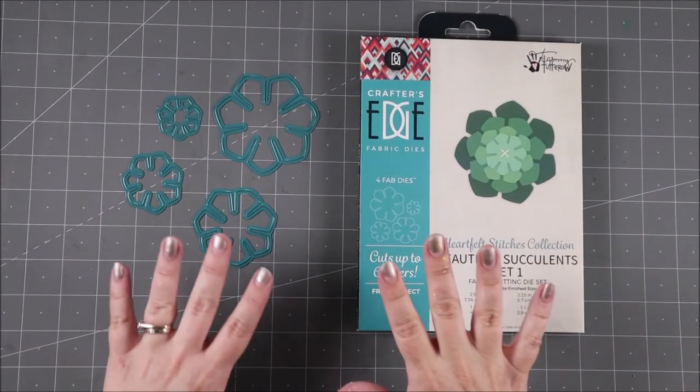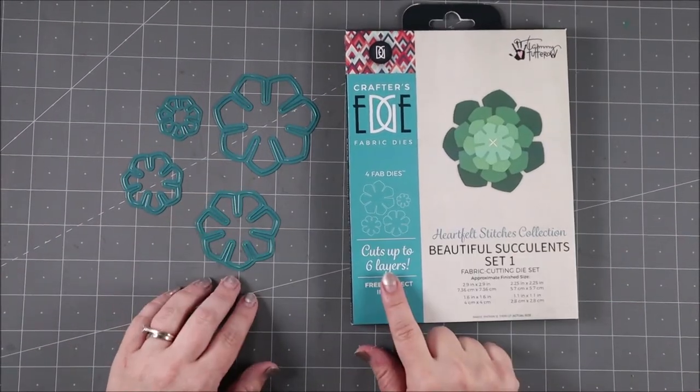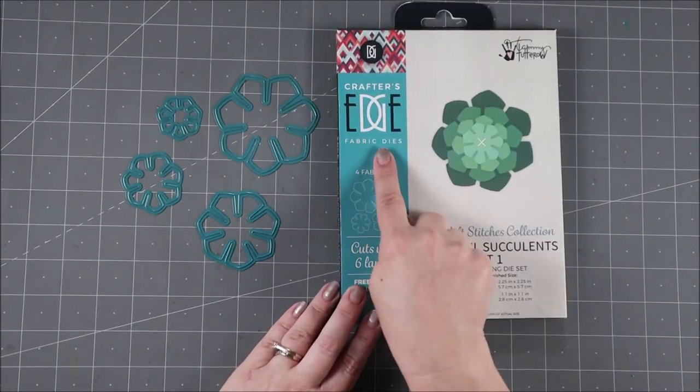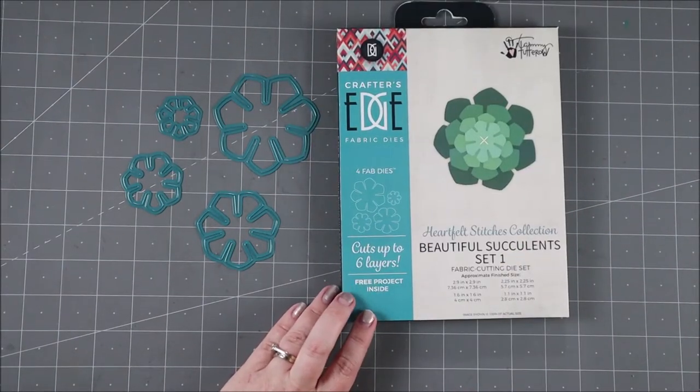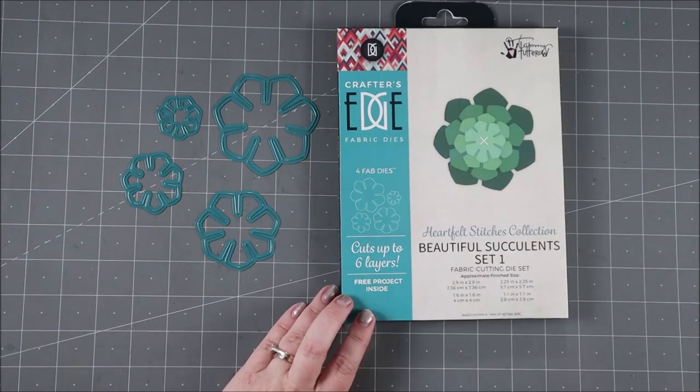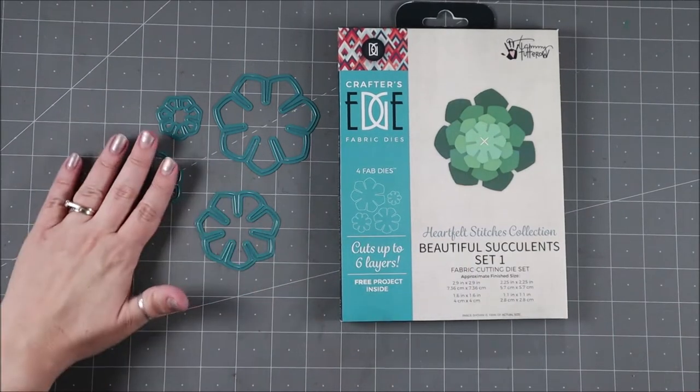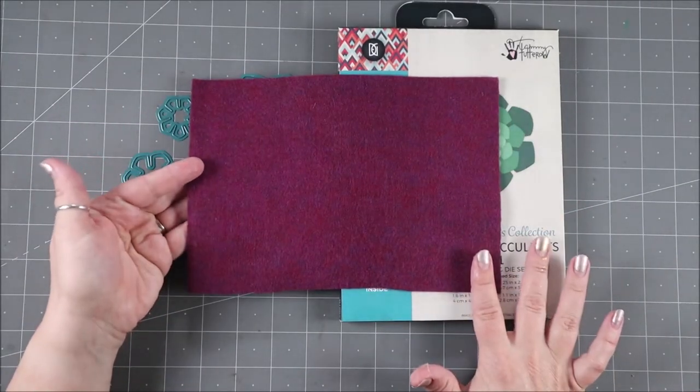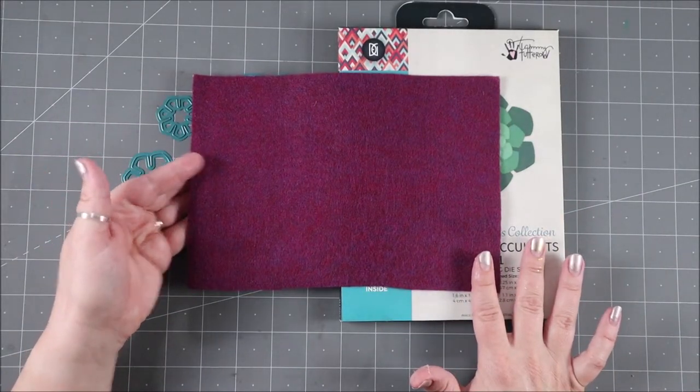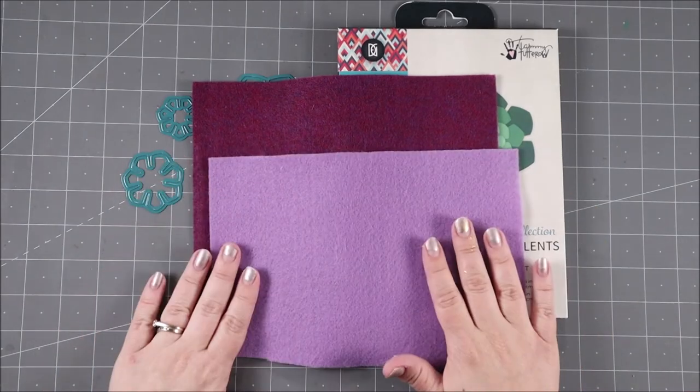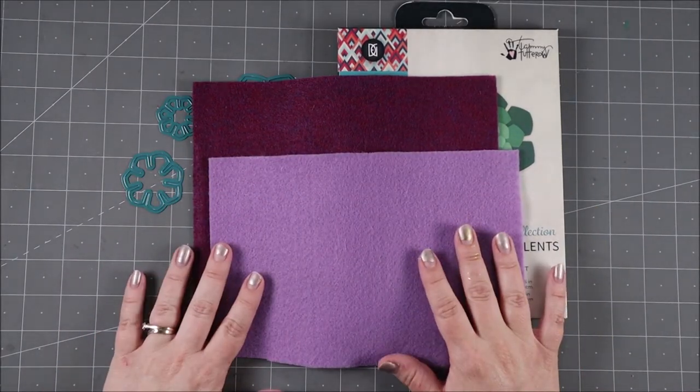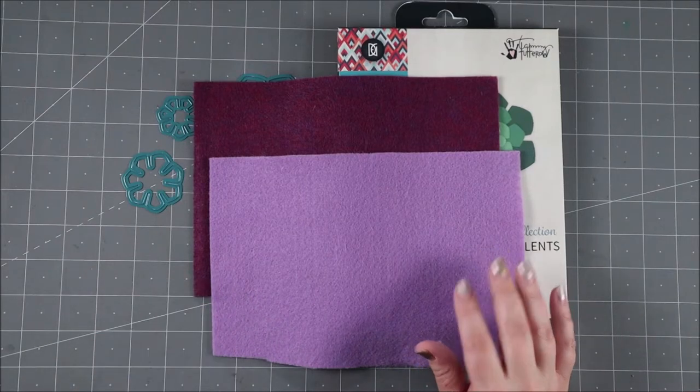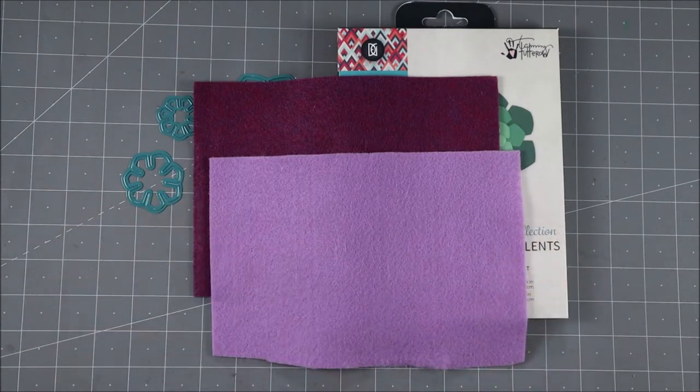While my frame is drying we are going to die cut out of felt this really cute succulent pattern from Crafters Edge. These fabric dies are a little bit thicker which means they can cut through felt a little bit better and it is by Tammy Turturro. So we are going to cut our felt and I'm going to do it out of a couple of colors. This is one of the Kunin felt colors. It's absolutely gorgeous. We got prickly purple, we got bright lilac. We're also going to do some greens and some blues and I'm also going to show you a couple other easy techniques that you can use to make succulents but let's die cut this first.